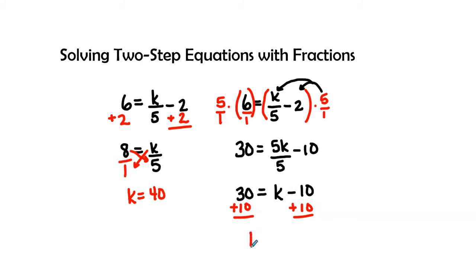This is going to give me a final answer of 40 is equal to k, because negative 10 and positive 10 gives me a zero. So I can also just rewrite this in standard form so I can have my letters on the left and my numbers on the right.